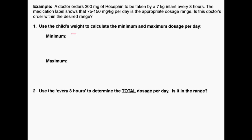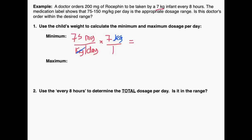I'll write 75 milligrams in the numerator and kilograms per day in the denominator. To eliminate kilograms using dimensional analysis, I multiply by kilograms — and my patient weighs 7 kilograms. The kilograms cancel, giving the total number of milligrams a 7-kilogram infant can have. We get 525, and the remaining units are milligrams per day.